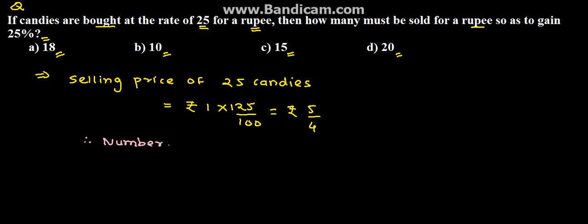So therefore we can say that number of candies sold for rupees 5 by 4 is equal to 25. For 1 rupee, candies sold...